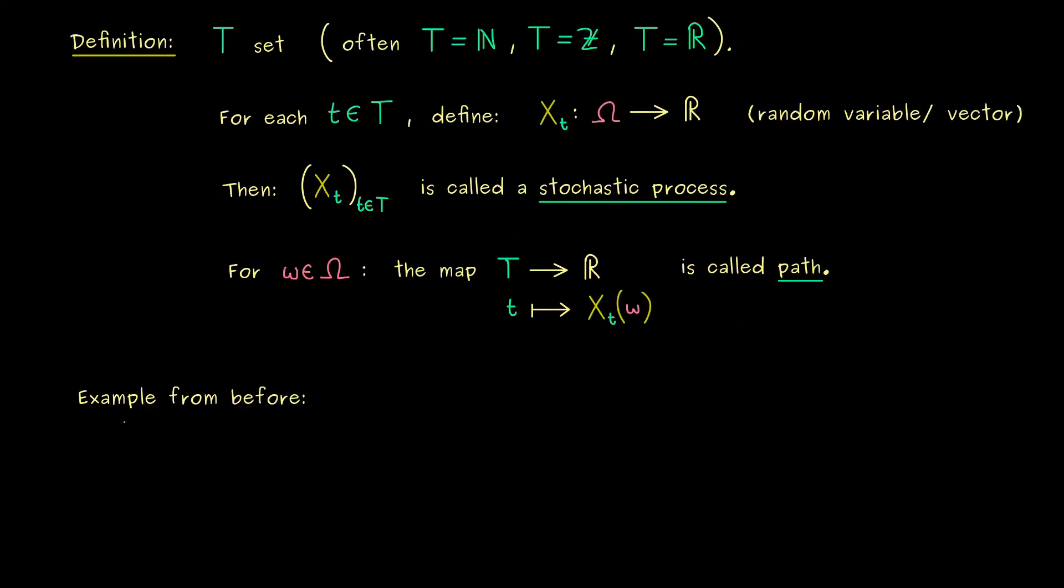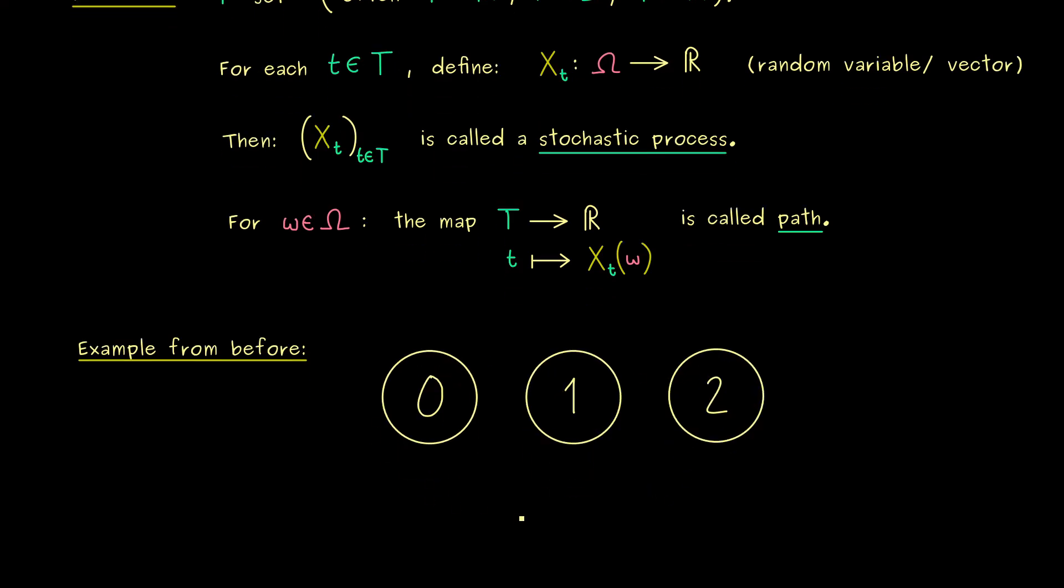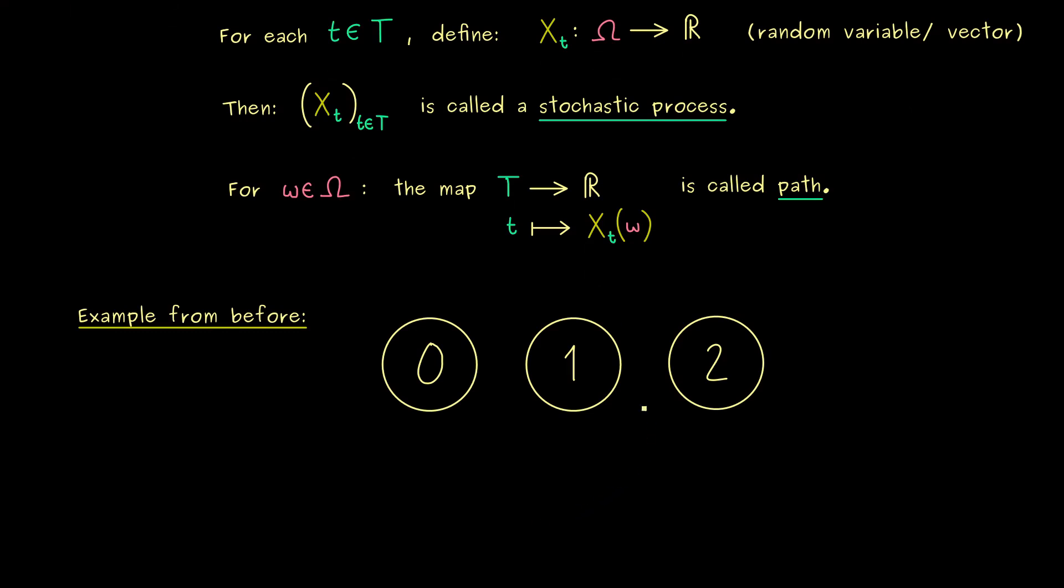So we have infinitely many coin tosses and we check when the first two heads in a row occur. And as before you see it's very helpful to define the three numbers as outcomes 0, 1, and 2. So these are the three possible outcomes for our random variables given by X_n. And now we can make the whole thing here into a dynamic picture, because if we increase n here we know that we will jump around on these numbers.